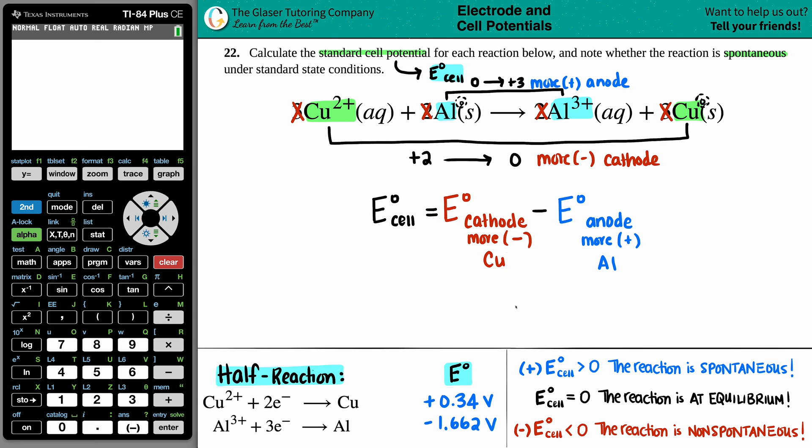Now I just want to make a point here that if you're using cathode minus anode, you do not have to change these E values. If some teachers like to use cathode plus anode, then you have to change one of them. I don't like to do that. The negative makes the change. So I'm sticking with it.